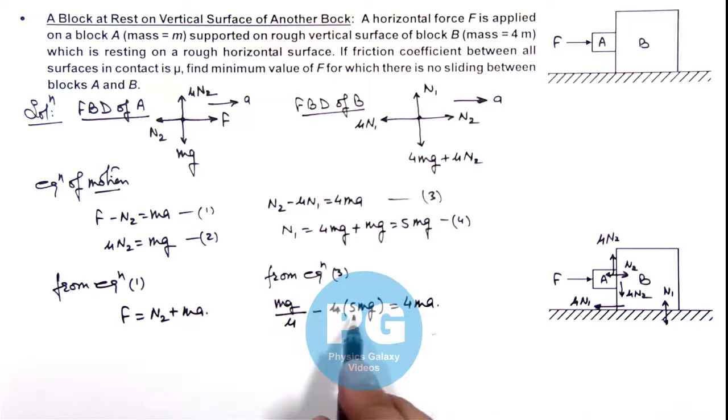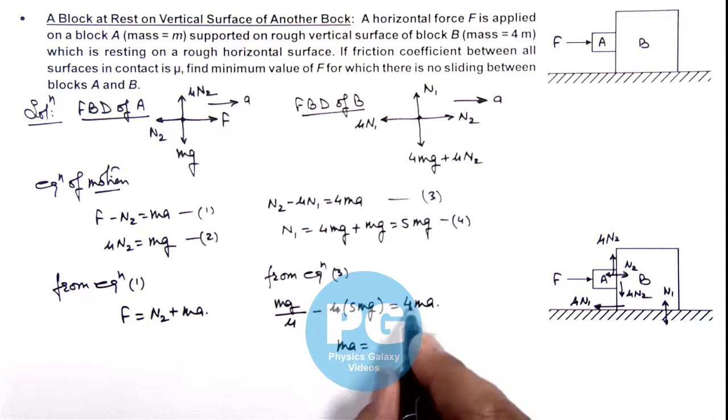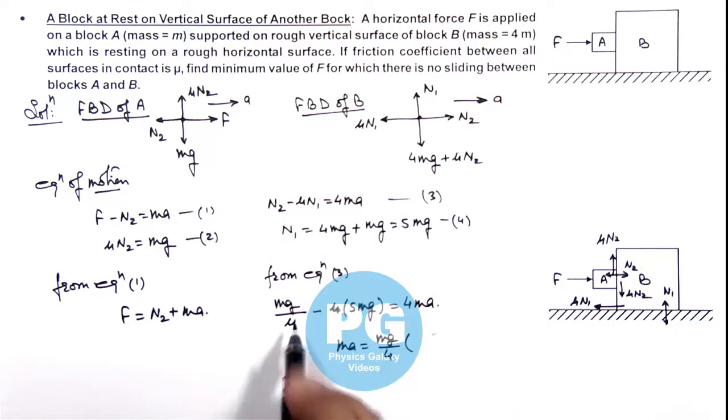So in this equation you can see the value of ma we are getting is mg/4 multiplied by 1/μ - 5μ.